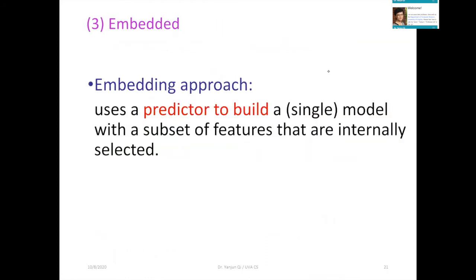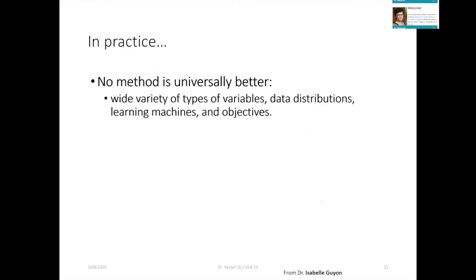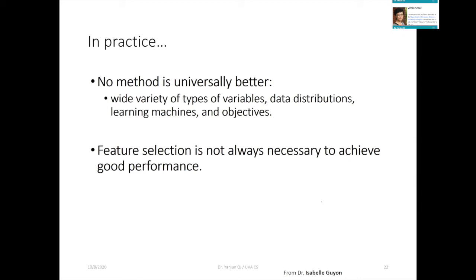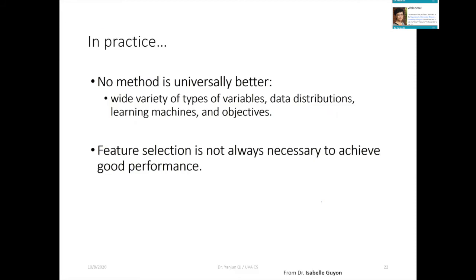The embedding-based approach is one predictor that can perform feature selection and prediction at the same time. Very classically, Lasso and Elastic Net belong to this group called the embedding-based feature selection approach. In practice no method is universally better, and feature selection is not always necessary, but it is very good practice especially for tasks with smaller labeled n and larger P.